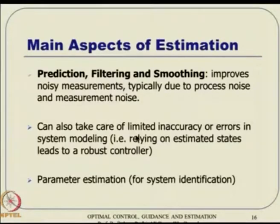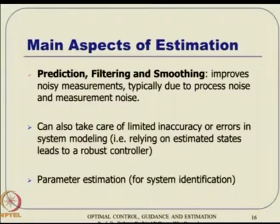This particular formulation of estimation can also take care — in a limited accuracy sense — of errors in the system modeling. If you have some system dynamics inaccuracy, you can think of the inaccuracy part as noise. In structural vibration, we typically take a finite order model, and whatever remains after that is treated as noise. Ideally they are not noise because there is physics behind it, but you can interpret that as noise for practical applications. So in that sense, it can take care of limited inaccuracies or errors in system modeling. It can also be used in parameter estimation or system identification.